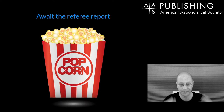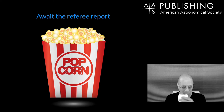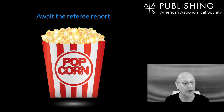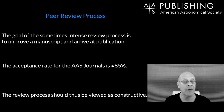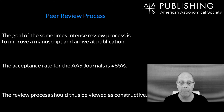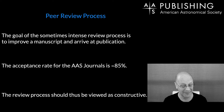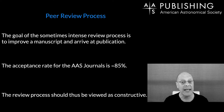Now your article is submitted and you await the referee report. The goal of the sometimes intense review process is to improve a manuscript and arrive at publication. The acceptance rate for the AAS journals is about 85%. Roughly 5% do not enter the peer review process, roughly 5% get abandoned at the first revision, and about 5% end up being rejected.